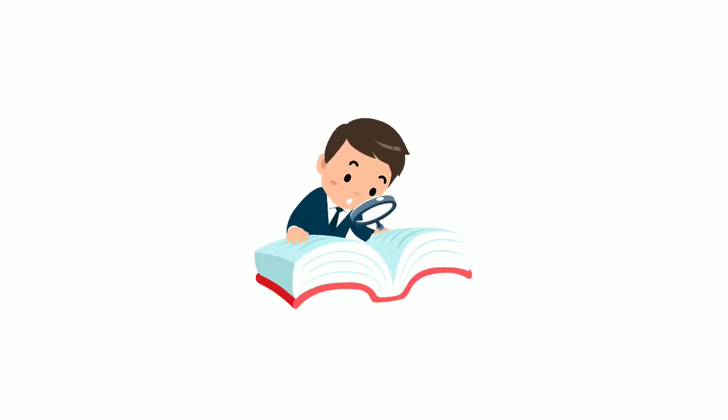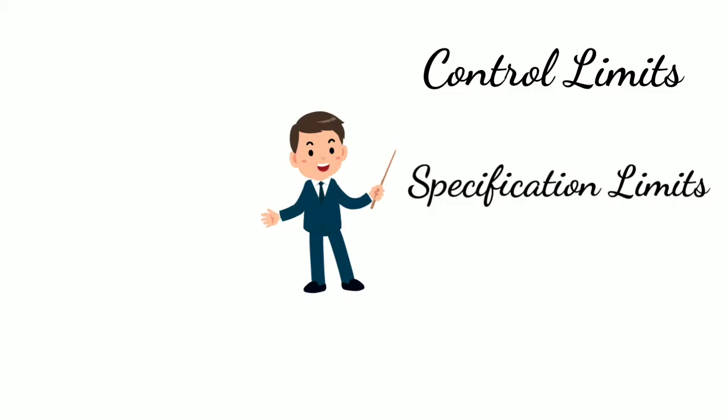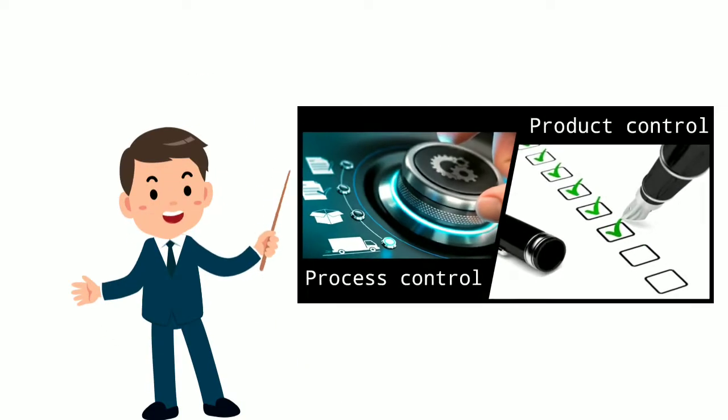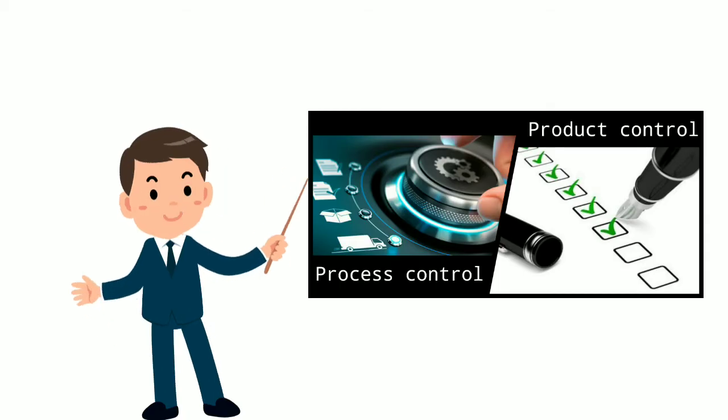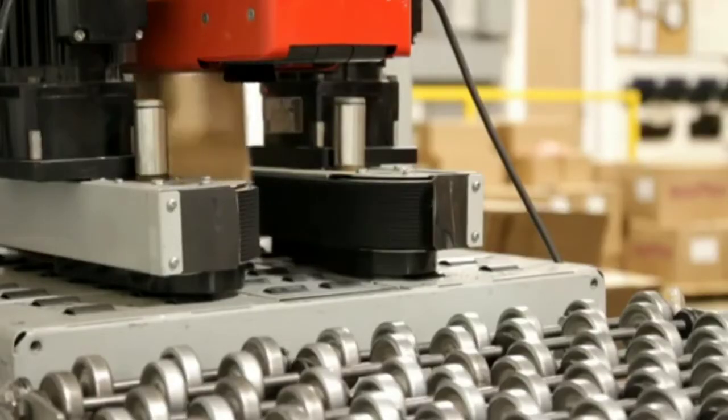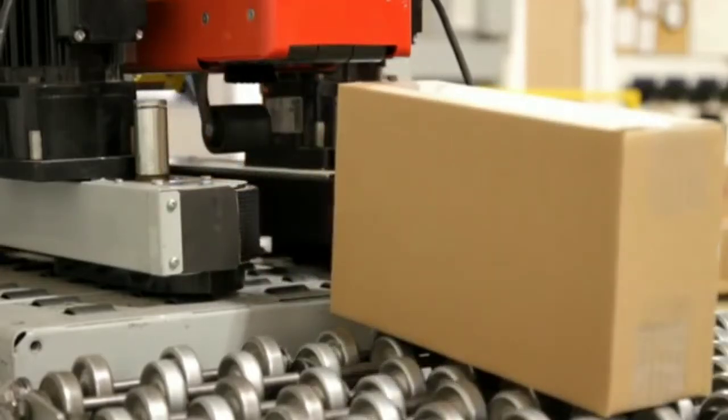That is control limit, specification limit and tolerance limit. So last video we studied about process control and product control. We have seen how we can use process control and how we can use product control.